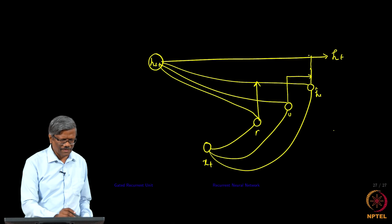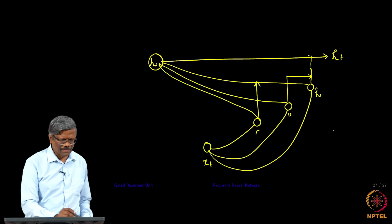This is a very simple representation of what we saw in the earlier diagram. With this I conclude the lecture series on RNN, LSTM and GRU.